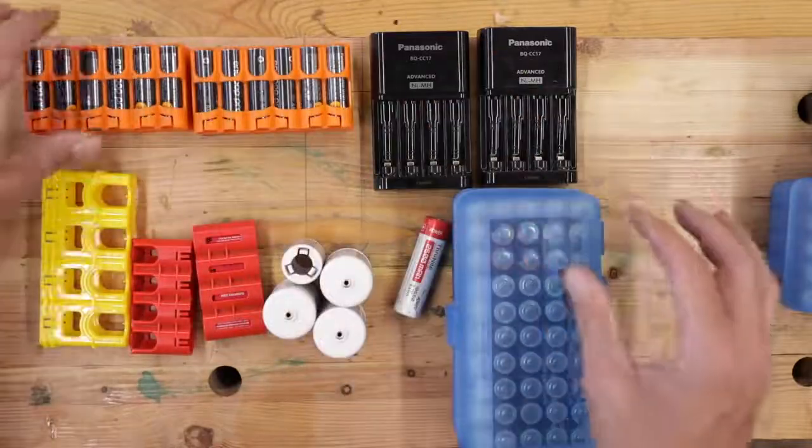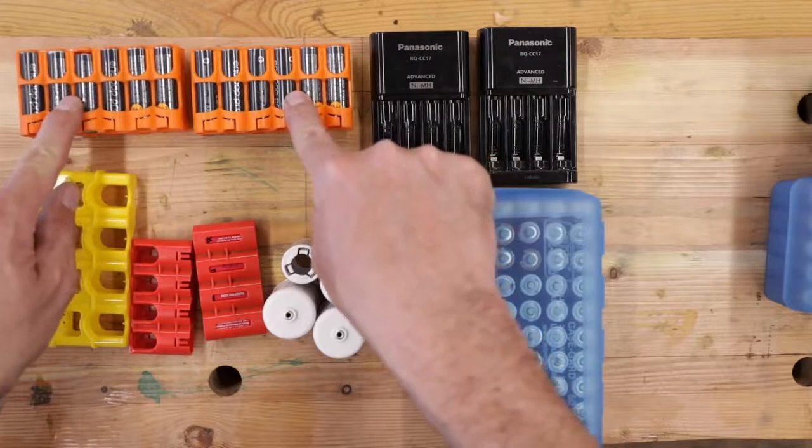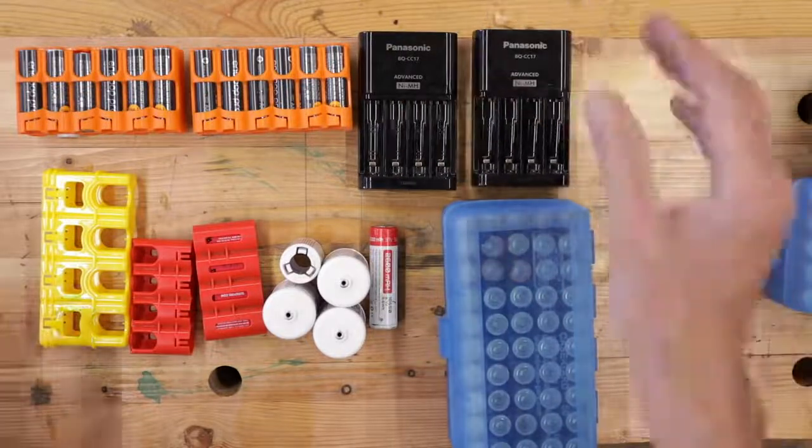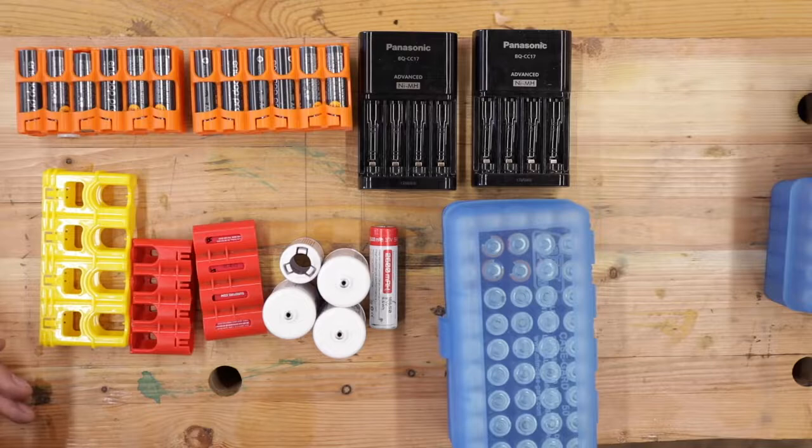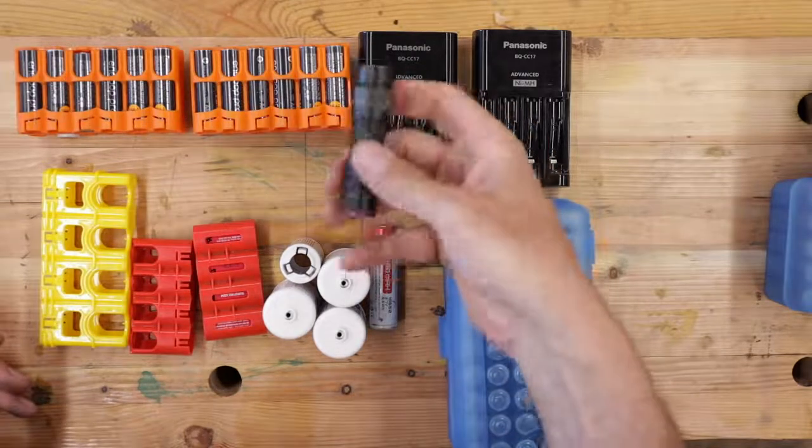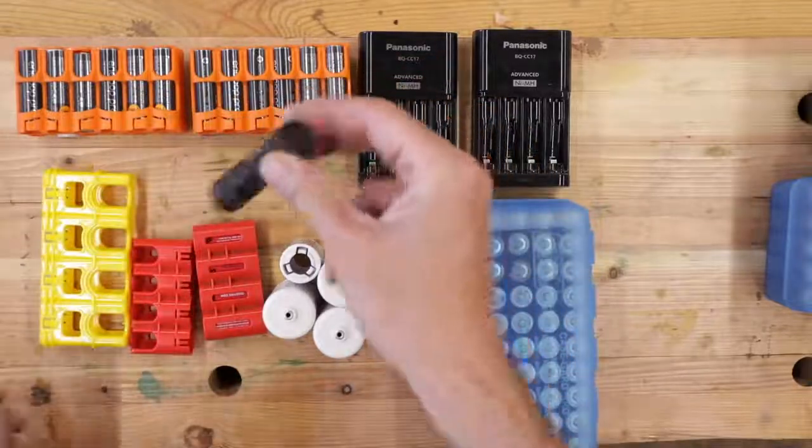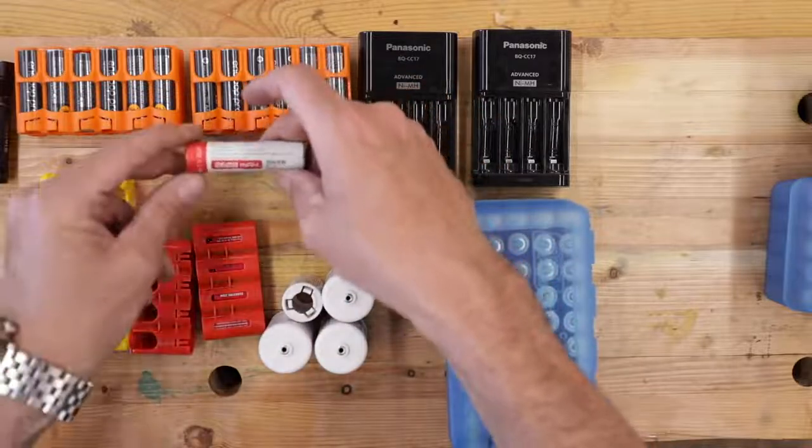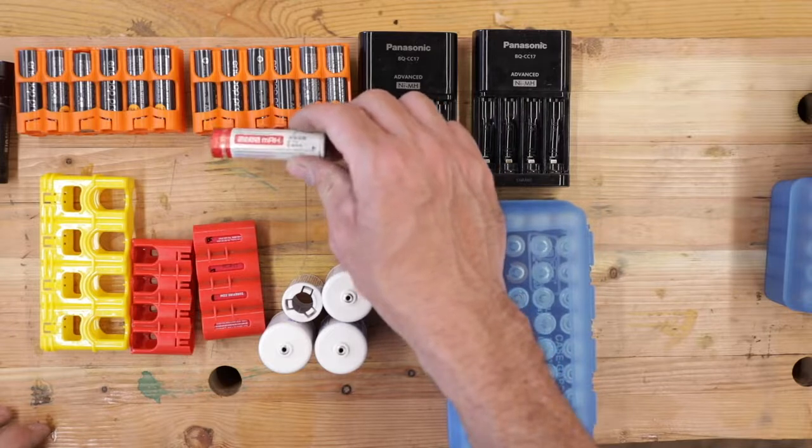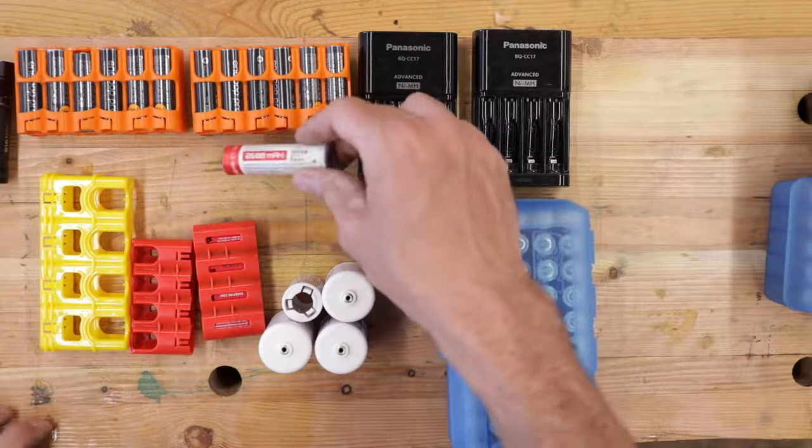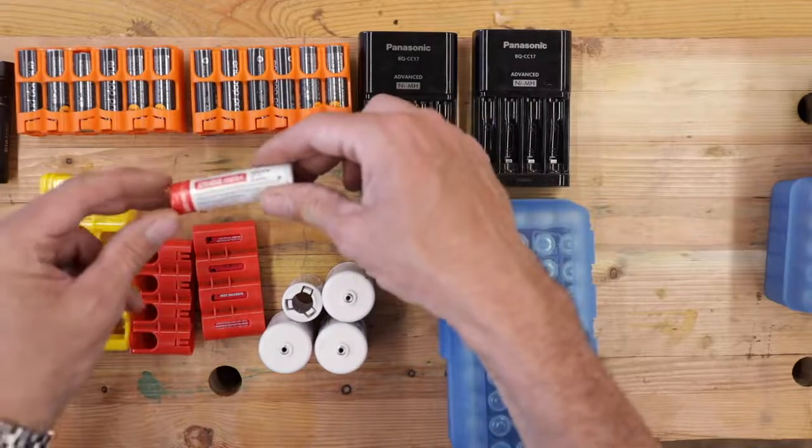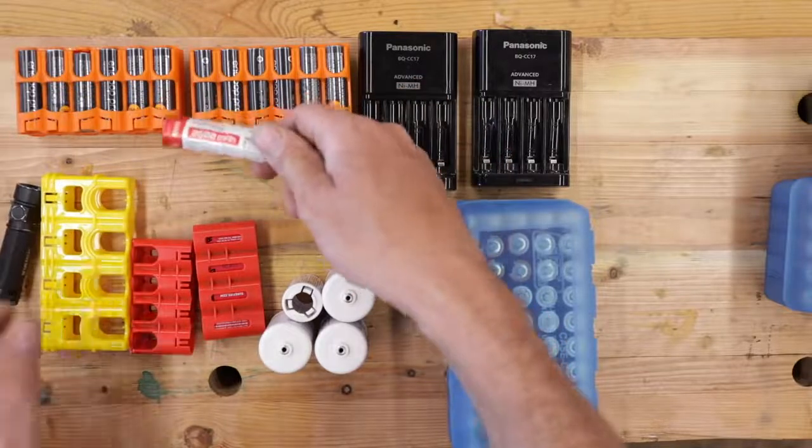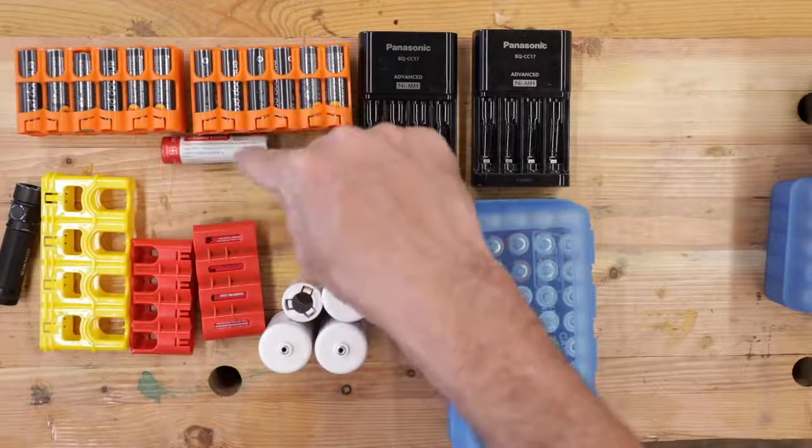Primary, the number one, the bread and butter is going to be the rechargeable double A's. Yeah, I know they're not the most efficient, but they're ubiquitous, they are readily available, and I just like them. All my EDC flashlights, I'm getting rid of a lot of that stuff and going to the double A batteries.